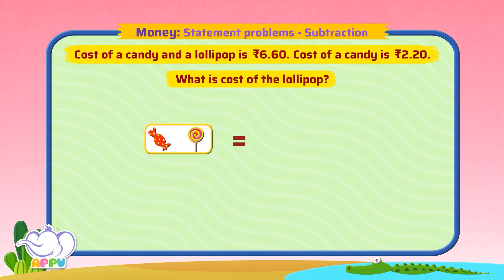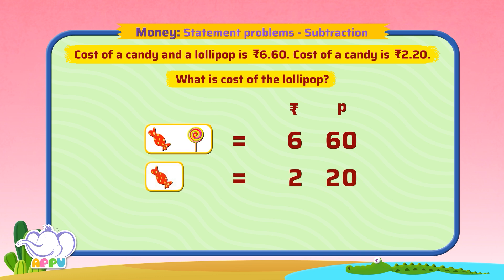The cost of a candy and a lollipop is 6 rupees 60 paise. The cost of a candy is 2 rupees 20 paise. What is the cost of the lollipop?